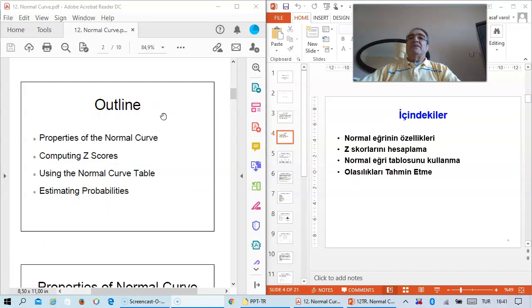Outline: Properties of a normal curve, computing z-scores, using the normal curve table, and estimating probabilities.